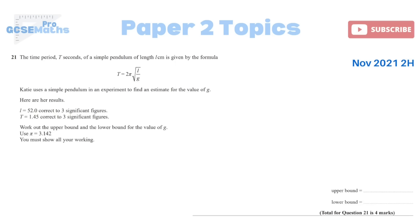Question 21, slightly more complicated now. We've got upper and lower bounds. The time period, t seconds, of a single pendulum of length L, is given by the formula which you can see there. Katie uses a simple pendulum in an experiment to find an estimate for the value of g. Here are her results. We've got L as 52.0, correct to three significant figures, and t as 1.45, correct to three significant figures. Work out the upper bound and the lower bound of the value of g. The first thing to really pick up on here is they want the value of g. g is not currently the subject of the formula. So firstly, I need to rearrange this. Now let's have a look at it. So first of all, work out the upper and lower bounds, both of them, for L and t.